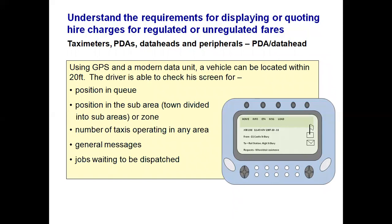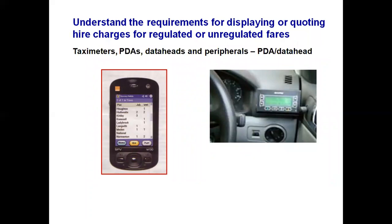Using GPS and modern data units, a vehicle can be located within 20 feet. The driver can also check their position in the queue for a job, how many drivers are in a given area, any general messages from the office, and any jobs waiting in other areas with no drivers available. Once a job is received, the screen shows the job number, time, date, pickup address, destination, customer's name and any special requests such as the customer needing assistance.